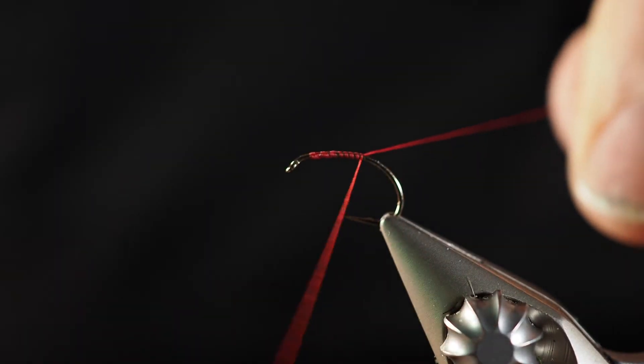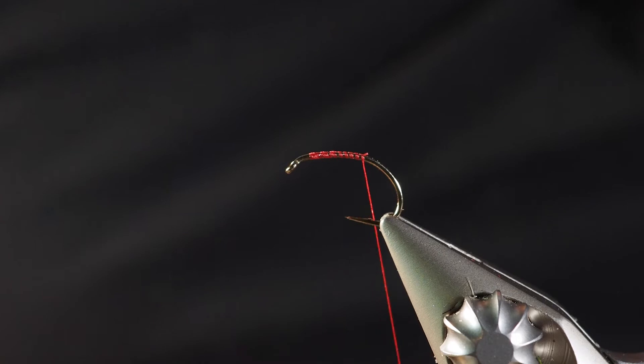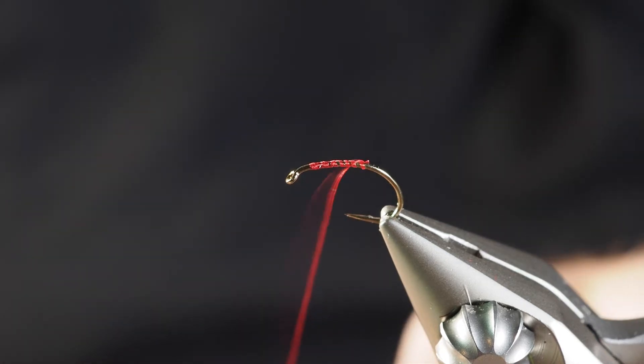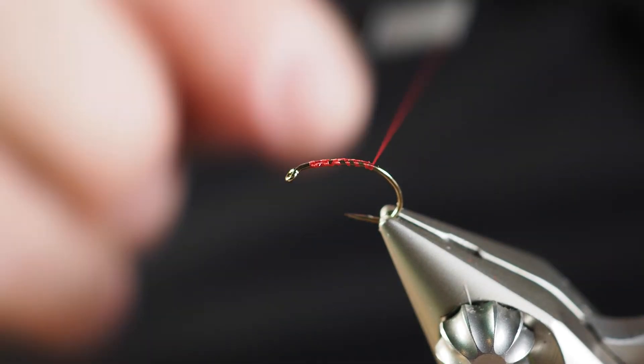So right now I'm just going to secure some red thread onto my hook, grab my scissors, and go ahead and cut that tag end off the back there. And I'm going to go ahead and take this a little bit deeper into the back of the hook here.